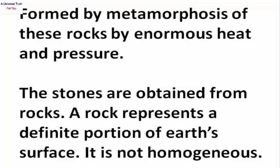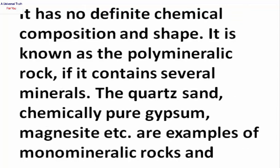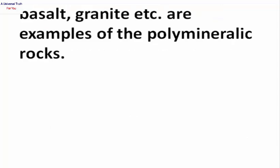The stones are formed from rocks. A rock represents a definite portion of the earth's crust; it is not homogeneous and has no definite chemical composition or shape. It is known as a polymineralic rock if it contains several minerals. Quartz sand, chemically pure gypsum, magnesite, etc. are examples of monomineralic rocks, while basalt, granite, etc. are examples of polymineralic rocks.